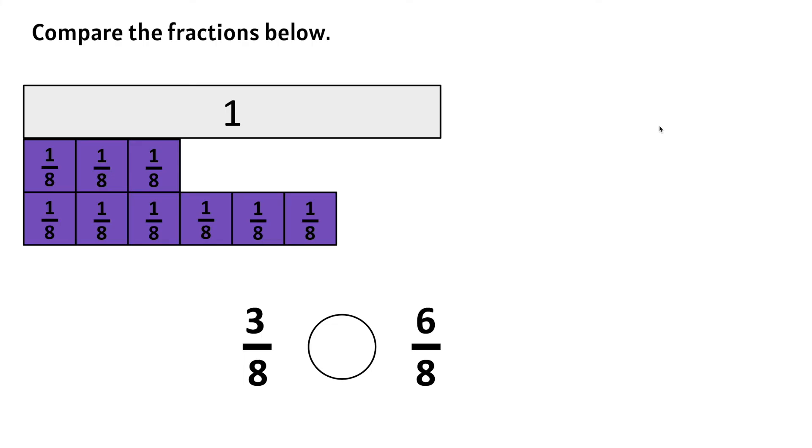Let's take a look at it in a different way. We have 1 whole pie. This pie only has 1, 2, 3 out of 8, or 3 eighths. This pie has 1, 2, 3, 4, 5, 6 eighths.